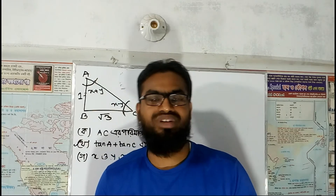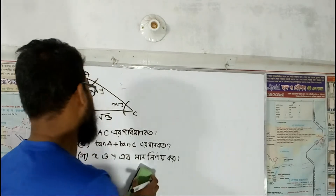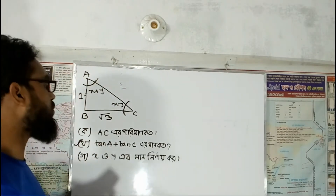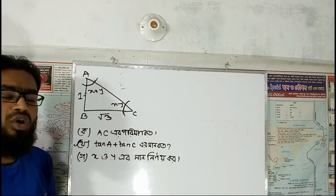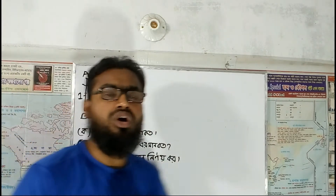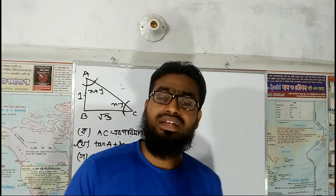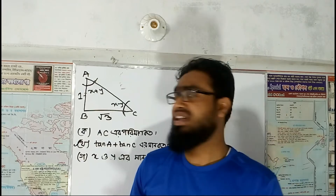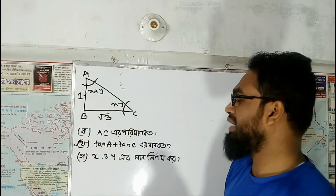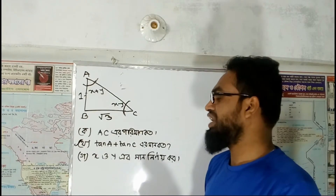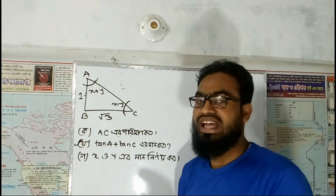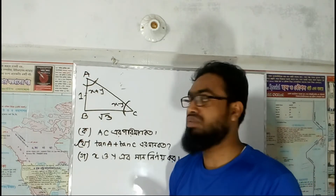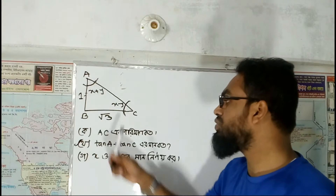We are going to talk about what will be the value of AC and how to identify the value of tan A plus tan C. Just look at this figure — it is perpendicular. We need to find out the hypotenuse. BC is equal to root over 3.